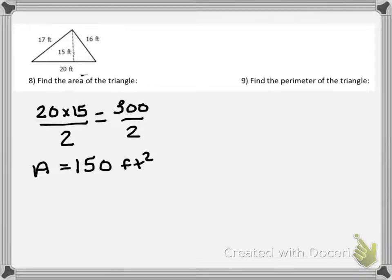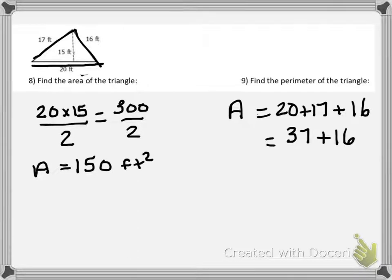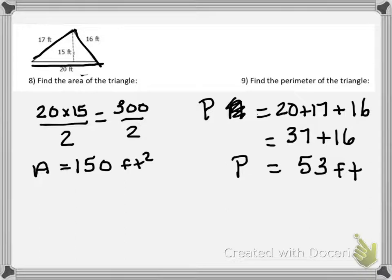To find the perimeter, we need to add up all the sides on the outside of the triangle. So we're going to start with 20, add 17, and then 16. Notice the 15 inside is not used because that is not part of the perimeter — the distance around. So 20 plus 17 is 37, and 37 plus 16 is 53. So the perimeter is 53 feet.